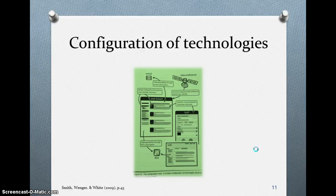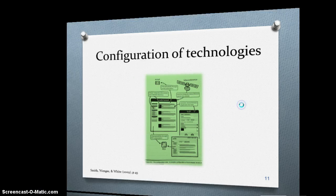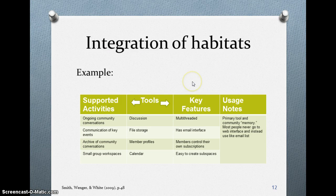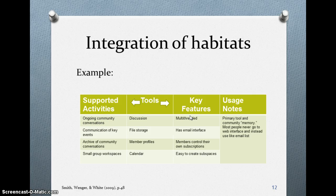The next focus was configuration of these technologies — how they can all be grouped to work together. When we integrate all of these habitats, we can see activities, tools, and features working together. For example, ongoing community conversations can involve discussion with multi-threaded features. Communication of key events can have file storage and an email interface. So everything can be linked together, broken down into activities, tools, and features.